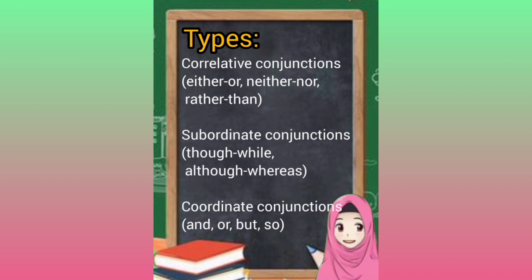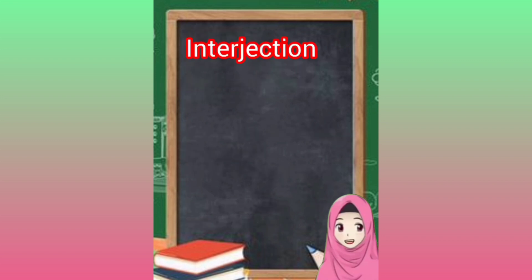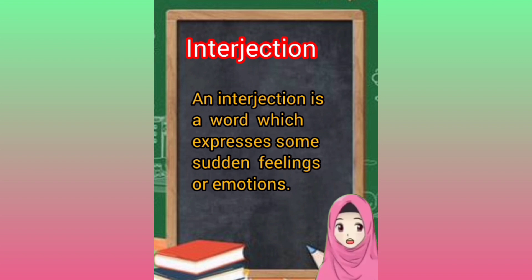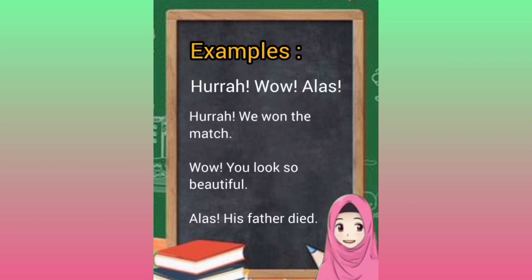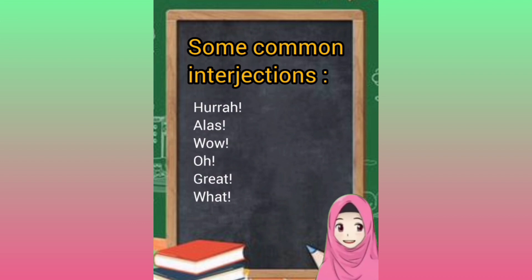Types of conjunctions: co-relative — either/or, neither/nor, rather than; subordinate — though, while, although, whereas; co-ordinate — and, or, but, so. An interjection is a word that expresses sudden feelings or emotions. Examples: hurrah, wow, alas. Hurrah, we won the match! Wow, you look so beautiful! Alas, his father died. Common interjections: hurrah, alas, wow, oh, great.